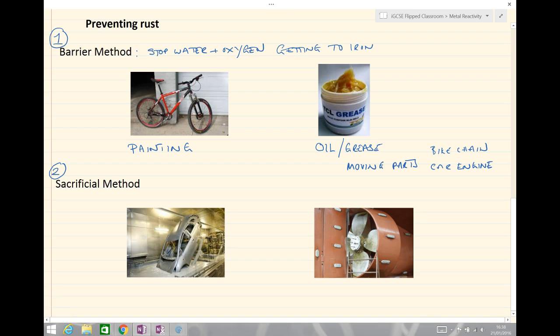The second method is called a sacrificial method, and we'll look at two ways that it can be done. We could cover something completely in a more reactive metal. So for example, zinc, and we could take zinc, which is more reactive than iron, and therefore if we've got a scratch on our car, let's say, if we scratch the car, the thing that's going to corrode first is the zinc.